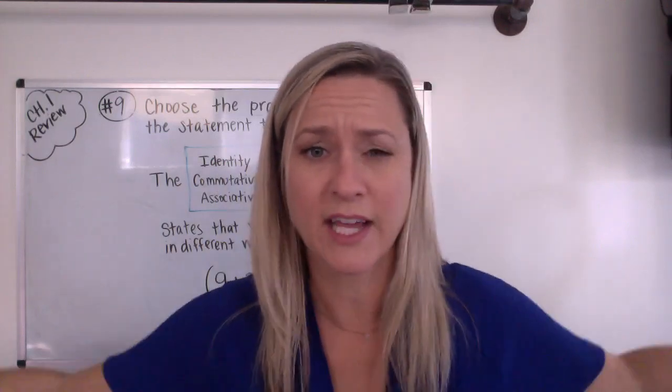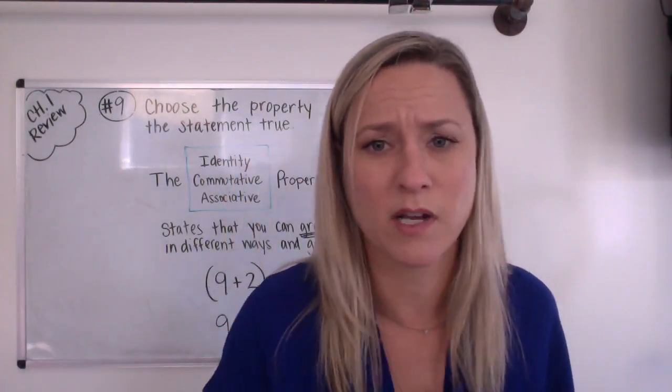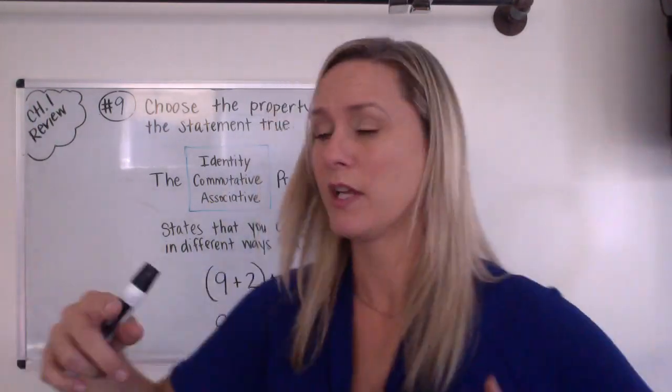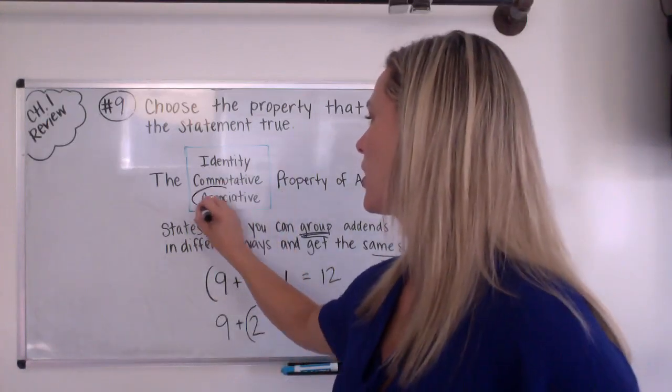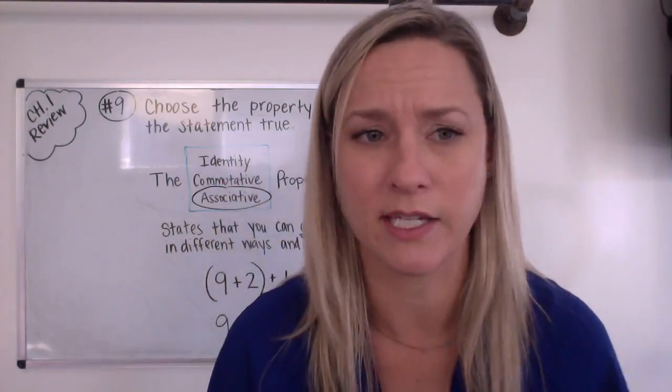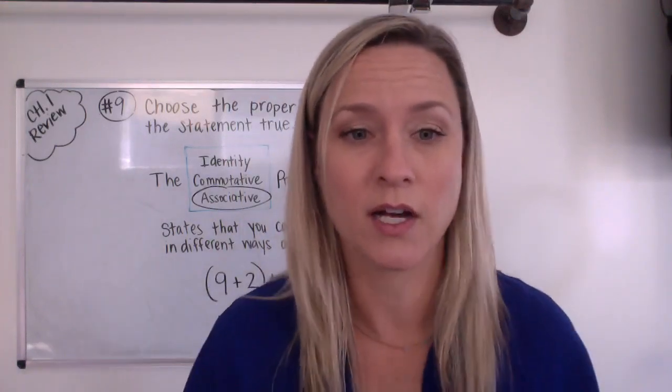So is it identity, commutative, or associative? Things were grouped. They are associating, just like you do on the playground or in your neighborhood or at the beach. Associate, group. That means our answer is associative. All right, kids. I think we're going to stop right here. This was the part one review of the chapter one review slash test. All right. See you for the second part. Bye.